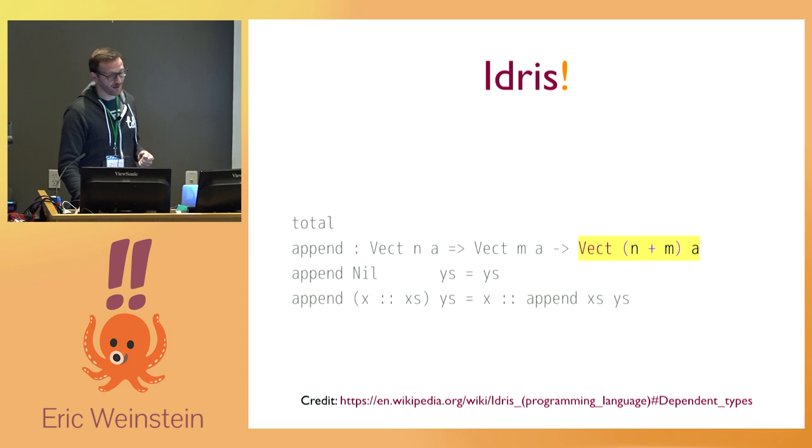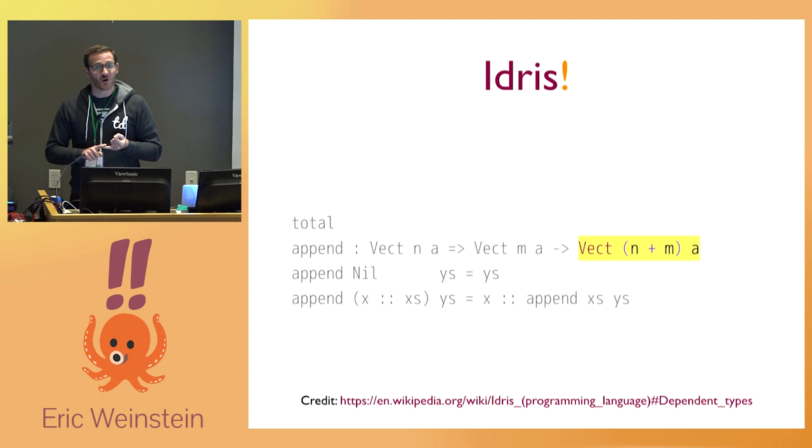Totality: basically the idea here is that you're telling the Idris compiler you want it to yell at you if you have not covered every possible input. You want to guarantee that your function is well-defined for all inputs and that it will eventually terminate. The nice thing about saying 'total' is that the compiler will yell at you immediately at compile time if you don't satisfy this.